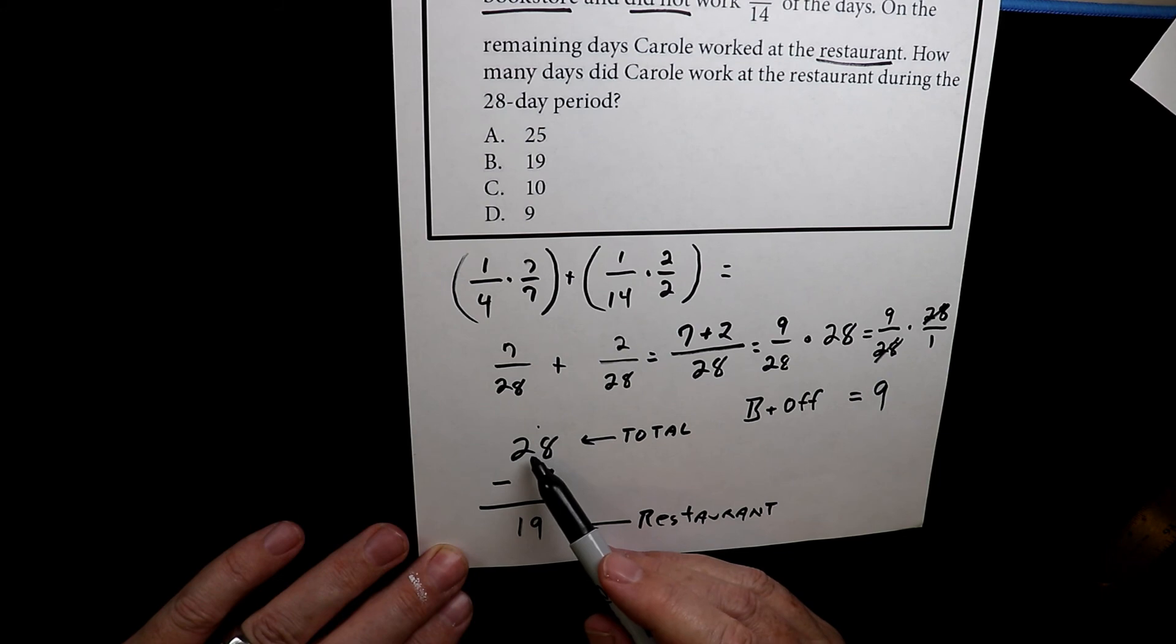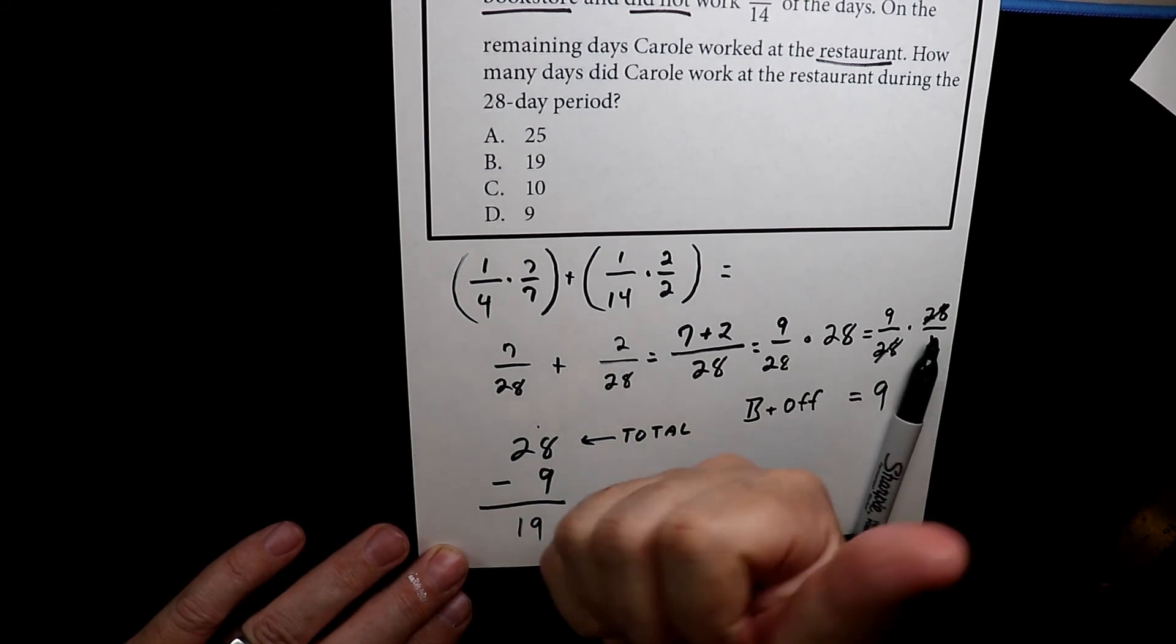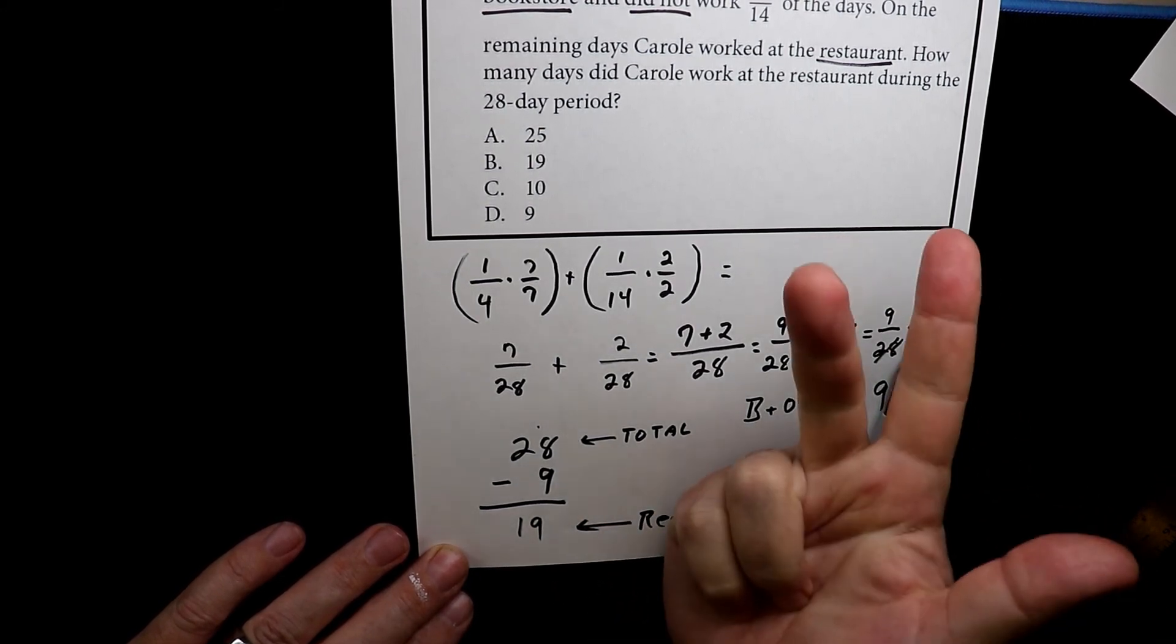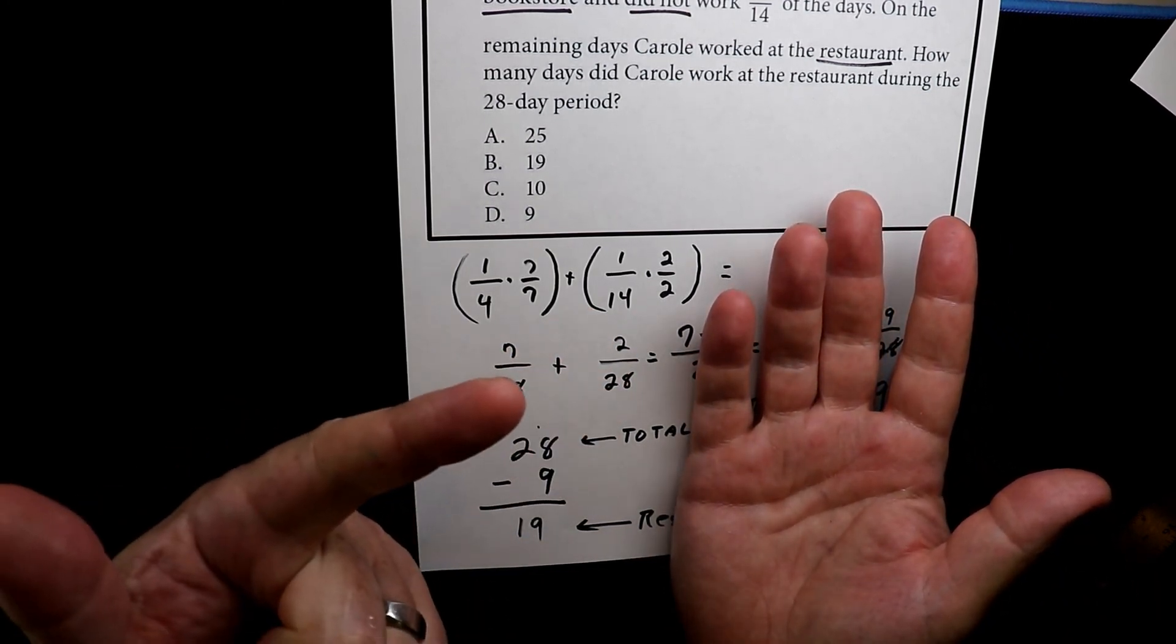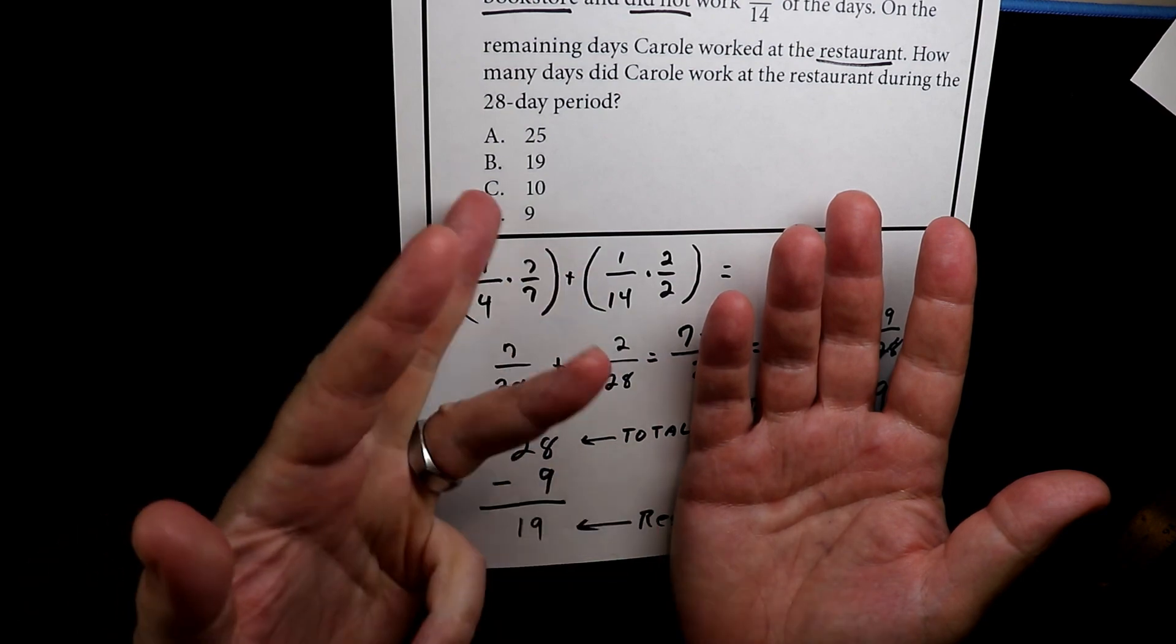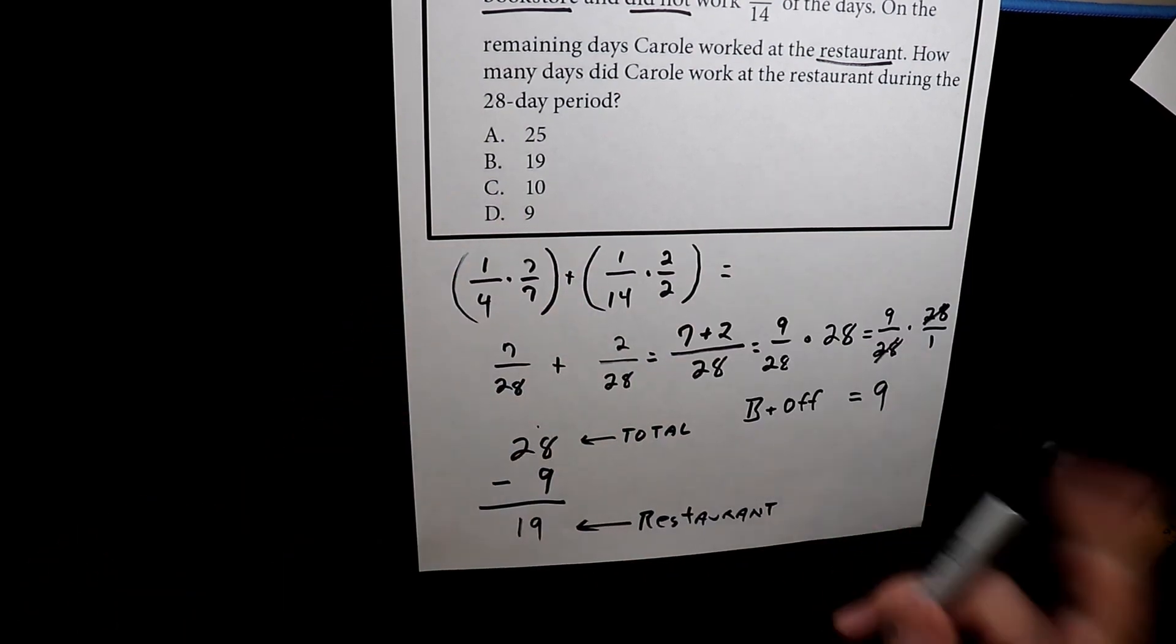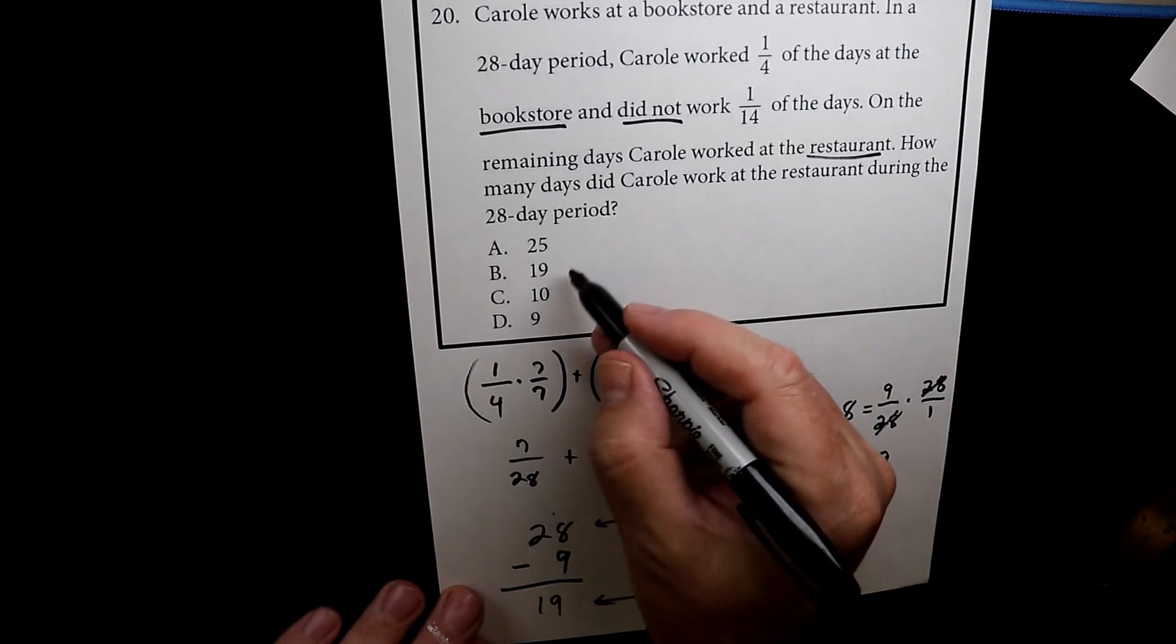And again, use your fingers. So we have 28, 27, 26, 25, 24, 23, 22, 21, 20, 19. And 19 is our final answer, B.